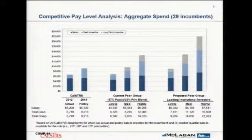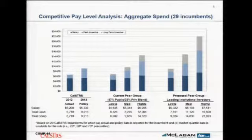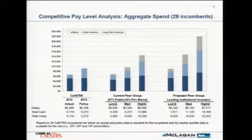If you had top performance, if maximum payouts were had across all time dimensions, what this shows is that your total comp at $9.2 million would be modestly above the competitive median. So essentially, this shows versus the current peer group that top decile performance begets median pay — median pay of organizations that are smaller and less complex than CalSTRS.